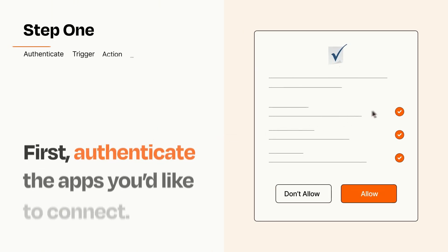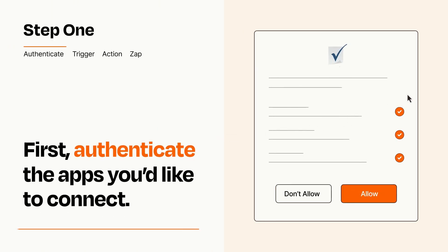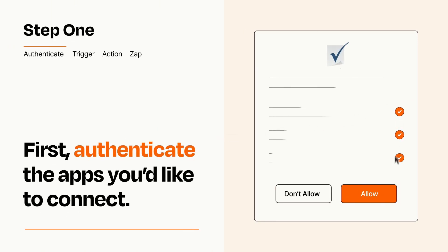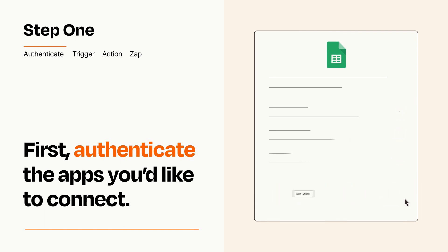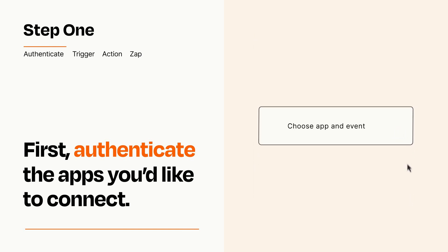It's easy. To get started, you'll just need to authenticate your apps, which takes just a few seconds. Zapier meets industry standards for encryption when connecting with each of your apps.